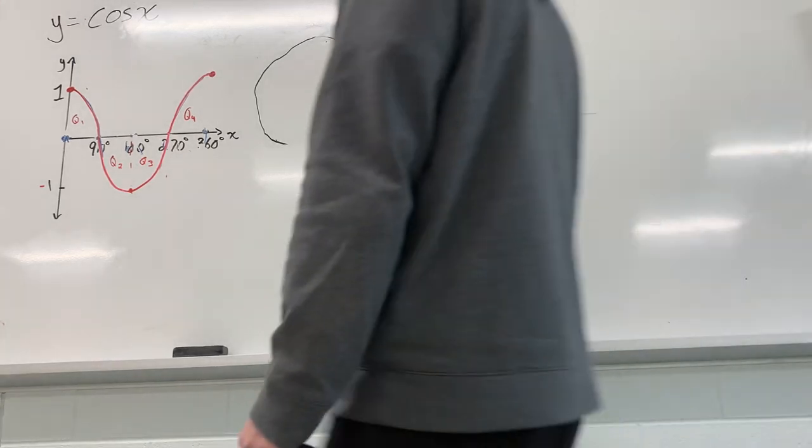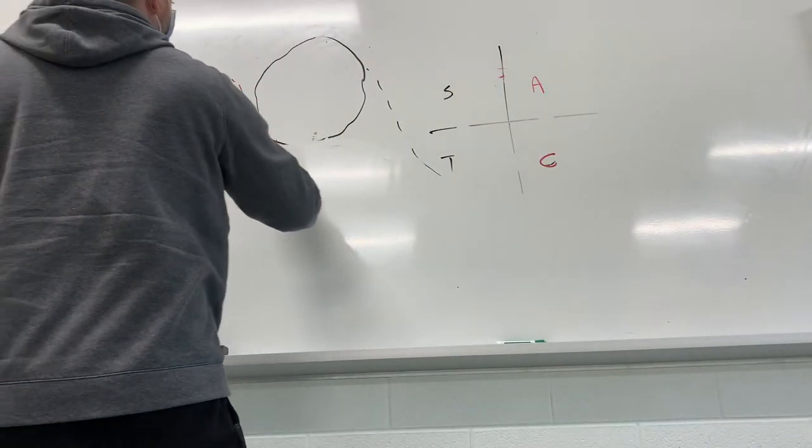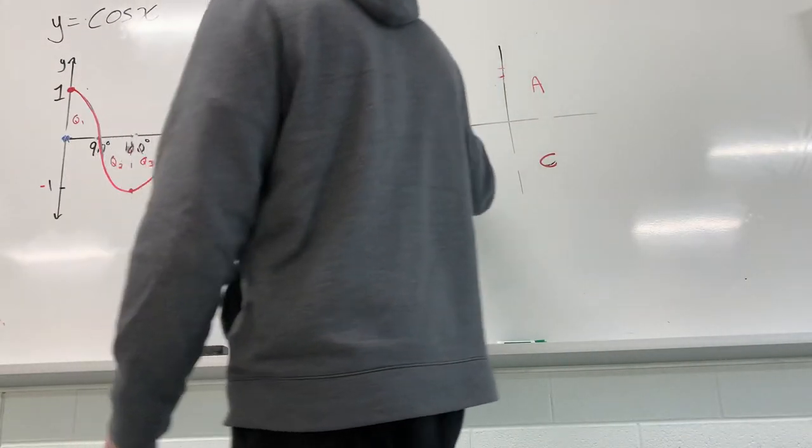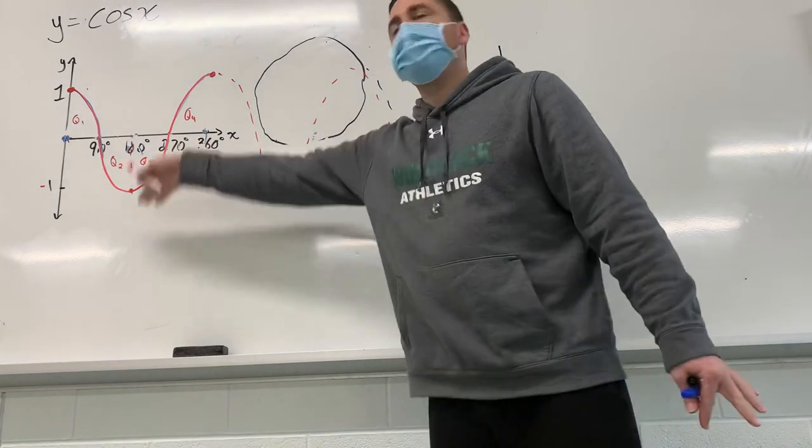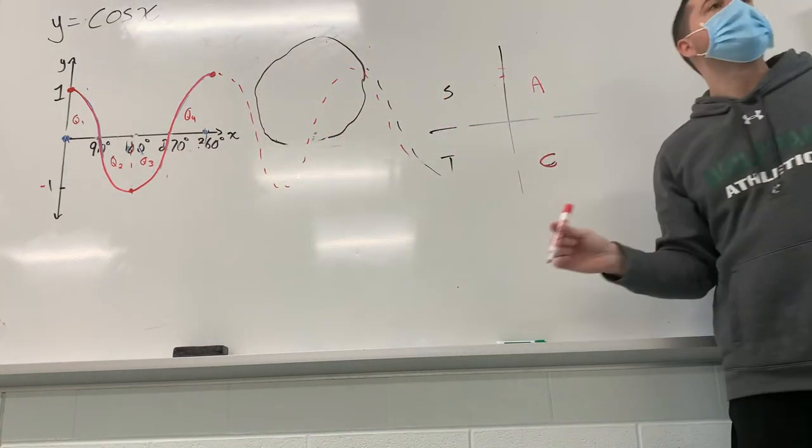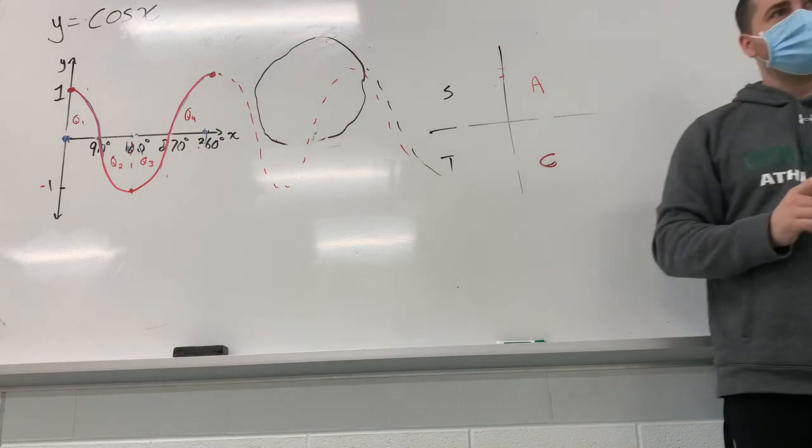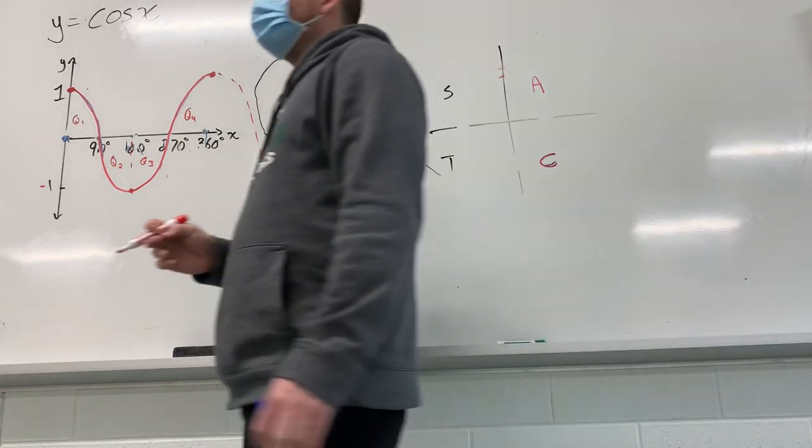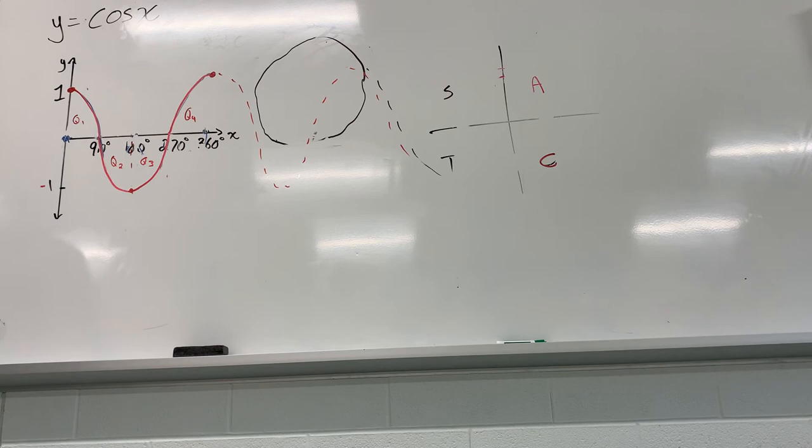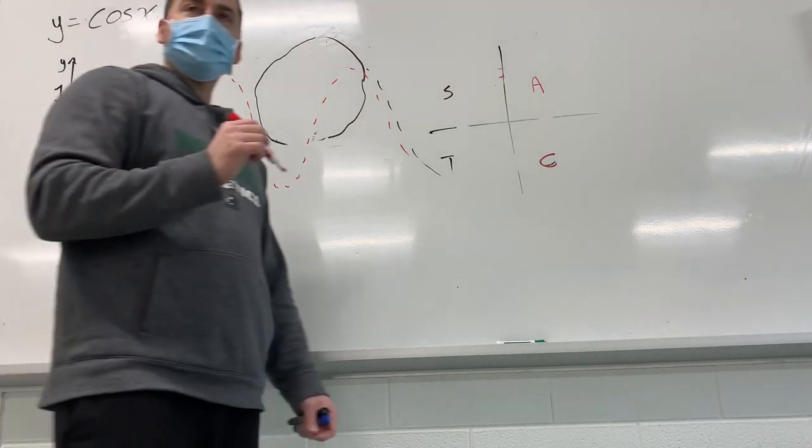So, and then it repeats itself, right? It would repeat over and over so you end up getting the same wave like it looks exactly the same if the starting points are different that's all. Okay for the sine it starts at zero zero for cosine it starts at positive one.